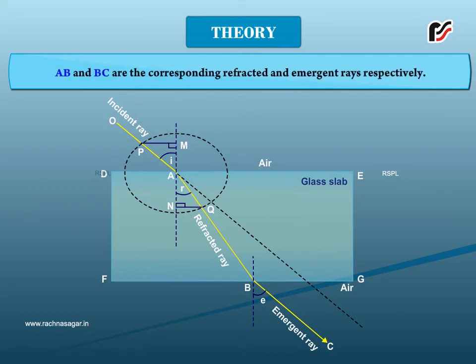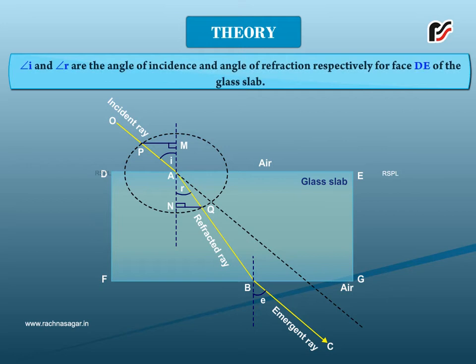AB and BC are the corresponding refracted and emergent rays respectively. MAN is the normal at point A on face DE of the glass slab. Angle i and angle r are the angle of incidence and angle of refraction respectively for face DE of the glass slab.